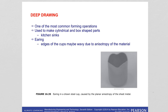Now let's take a look at deep drawing — one of the most common forming operations. It is used to make cylindrical and box-shaped parts such as kitchen sinks. One of the defects you can see in deep drawn cups is earring — when the edges become wavy. This is due to the anisotropy of the sheet metal from which you start your blank.